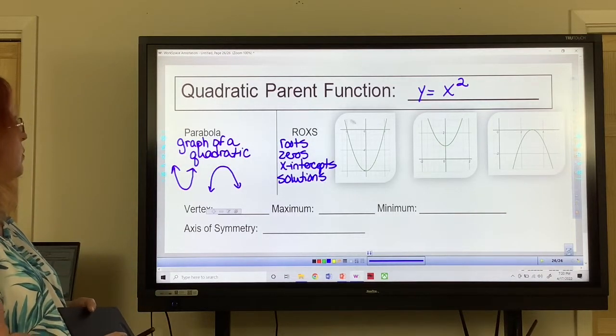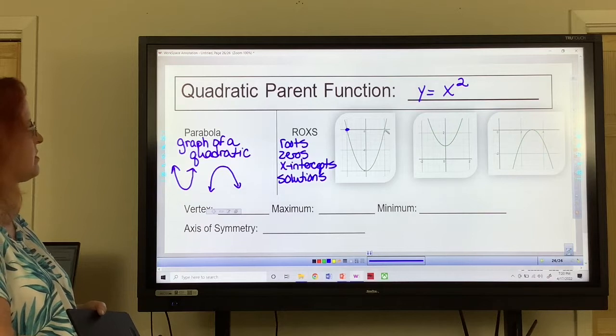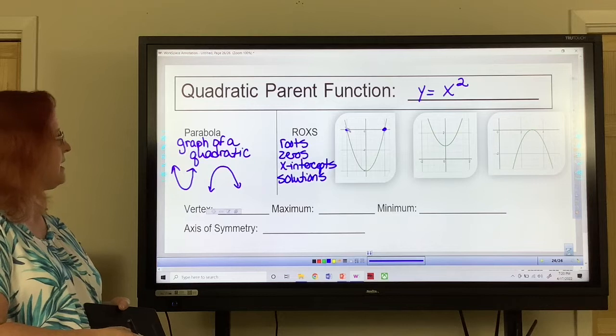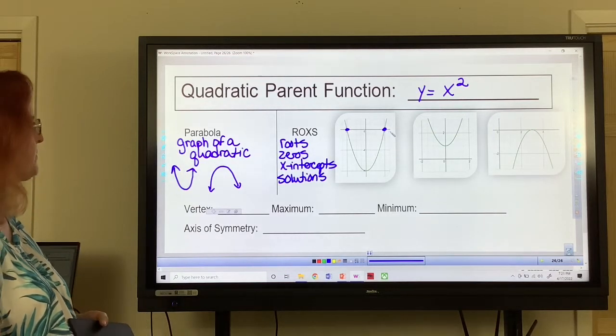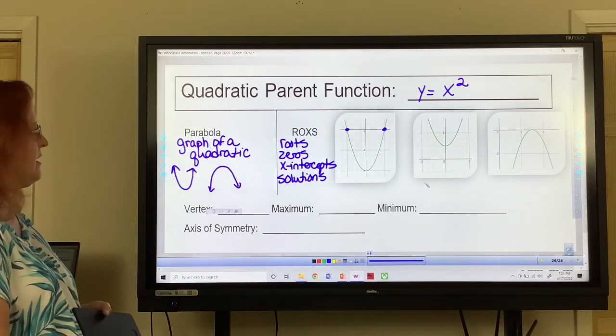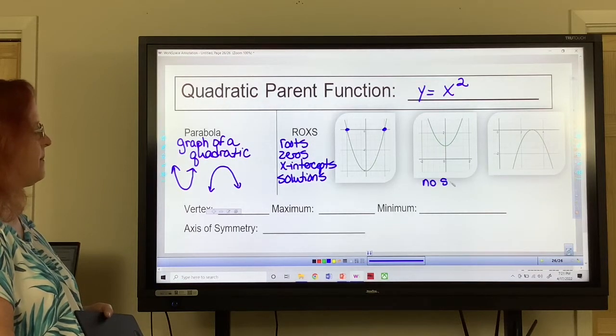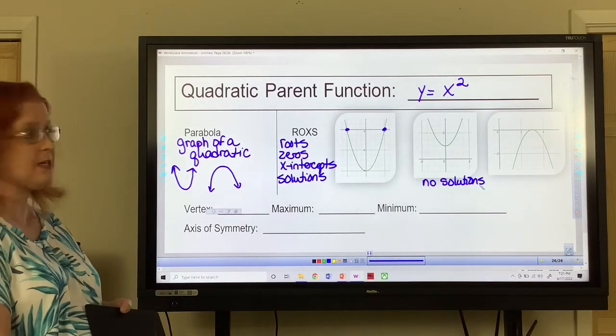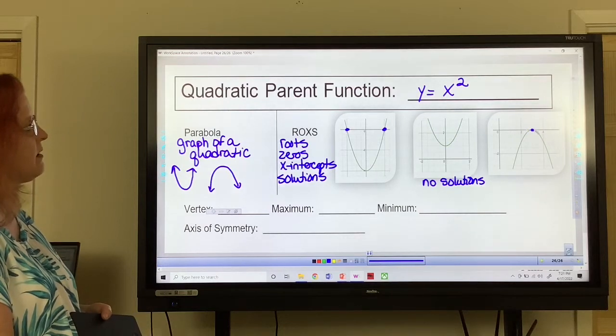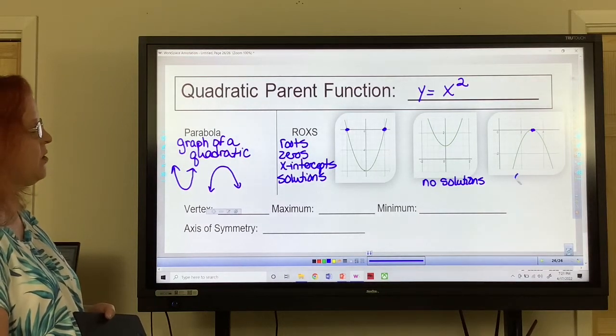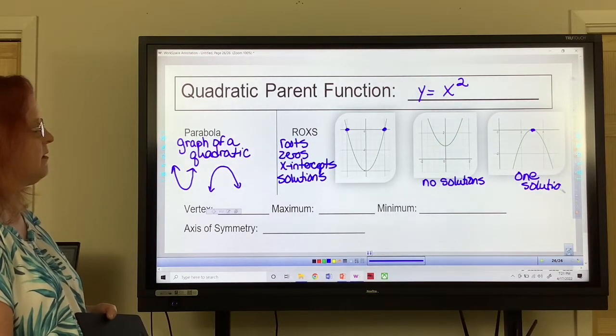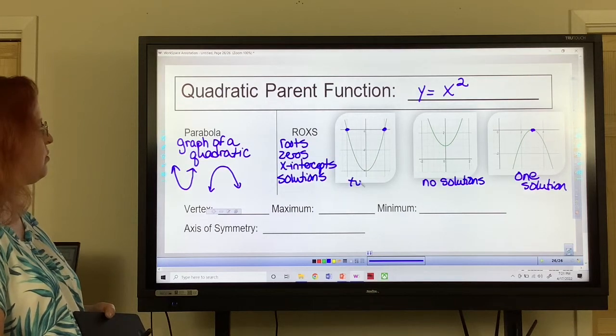So in this one, we have right here, there's one of ours, there's the other one. So our ROXS for this one, we have two. It's going to be negative two and positive two. For this one, no solutions, or no ROXS. This one only has one, and it's going to be at three, one solution. And this one has two solutions.